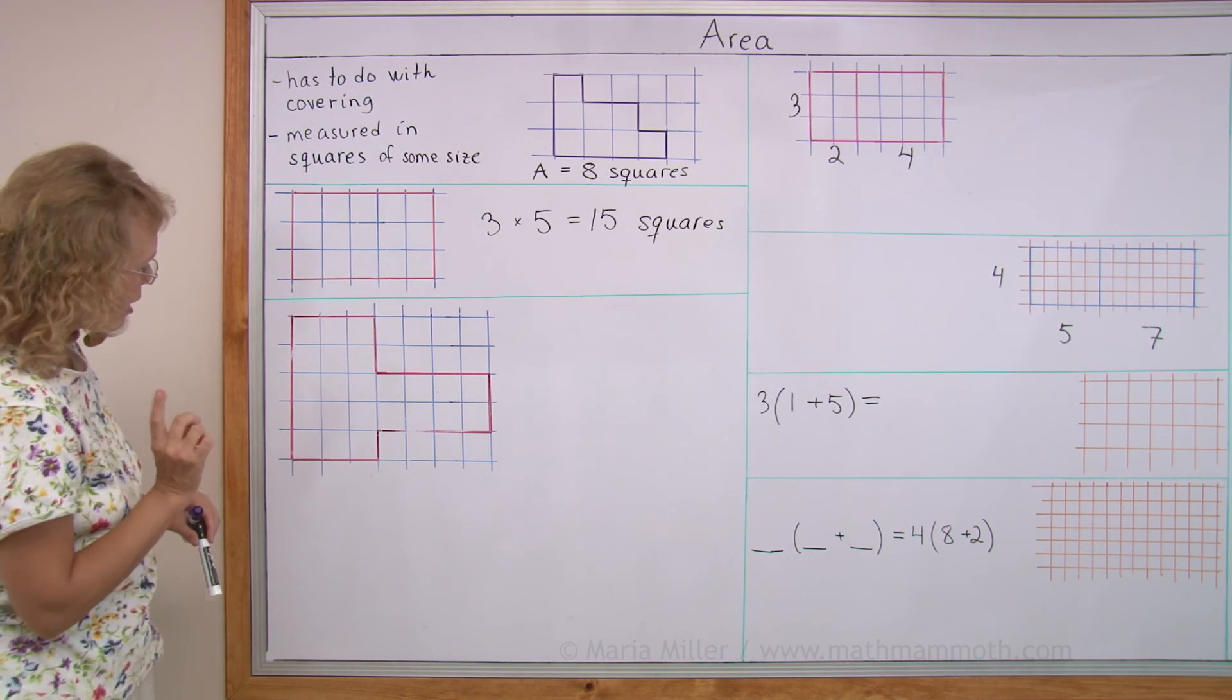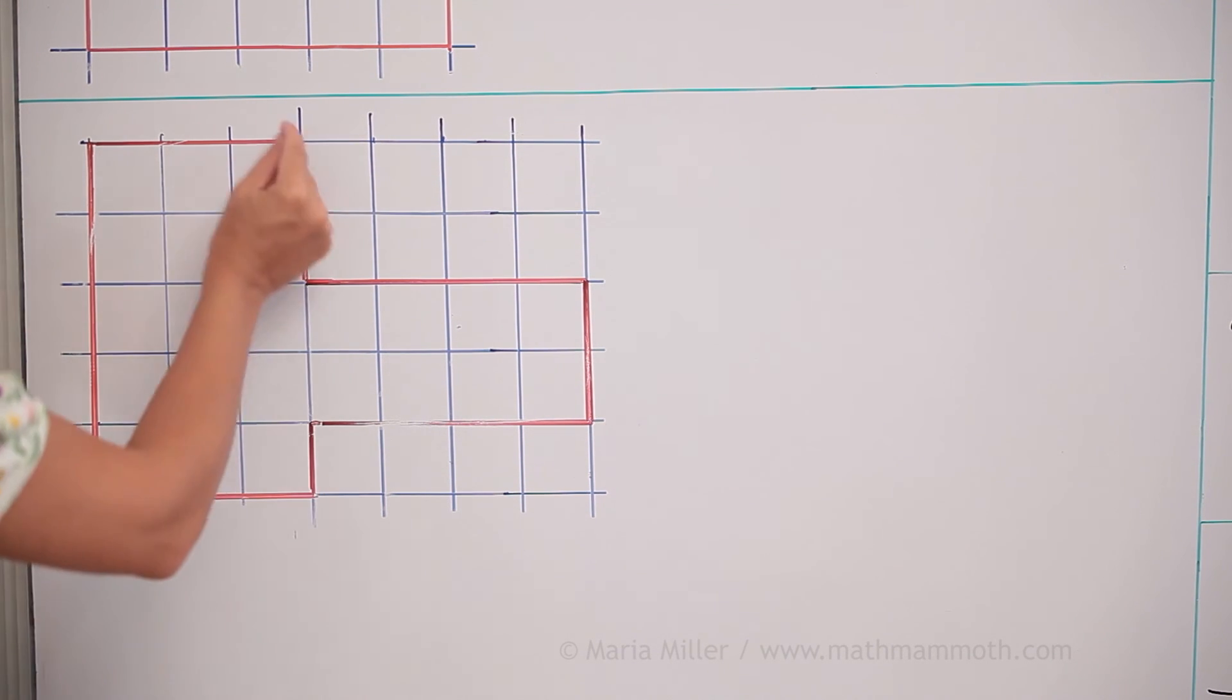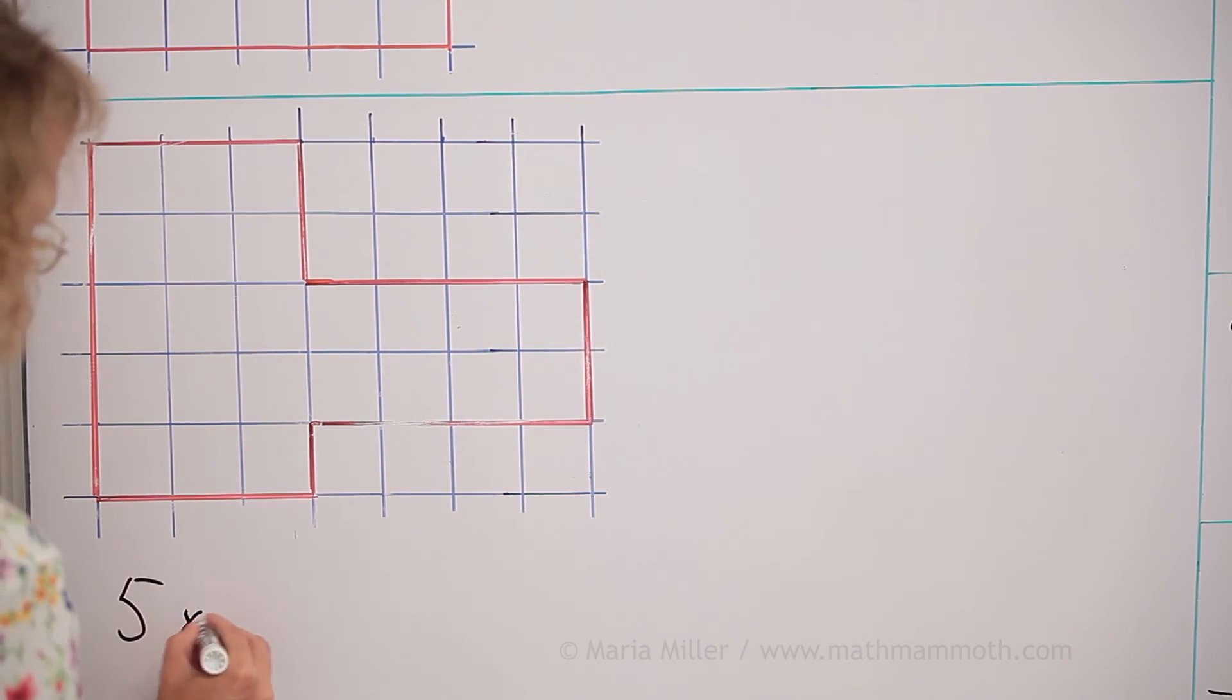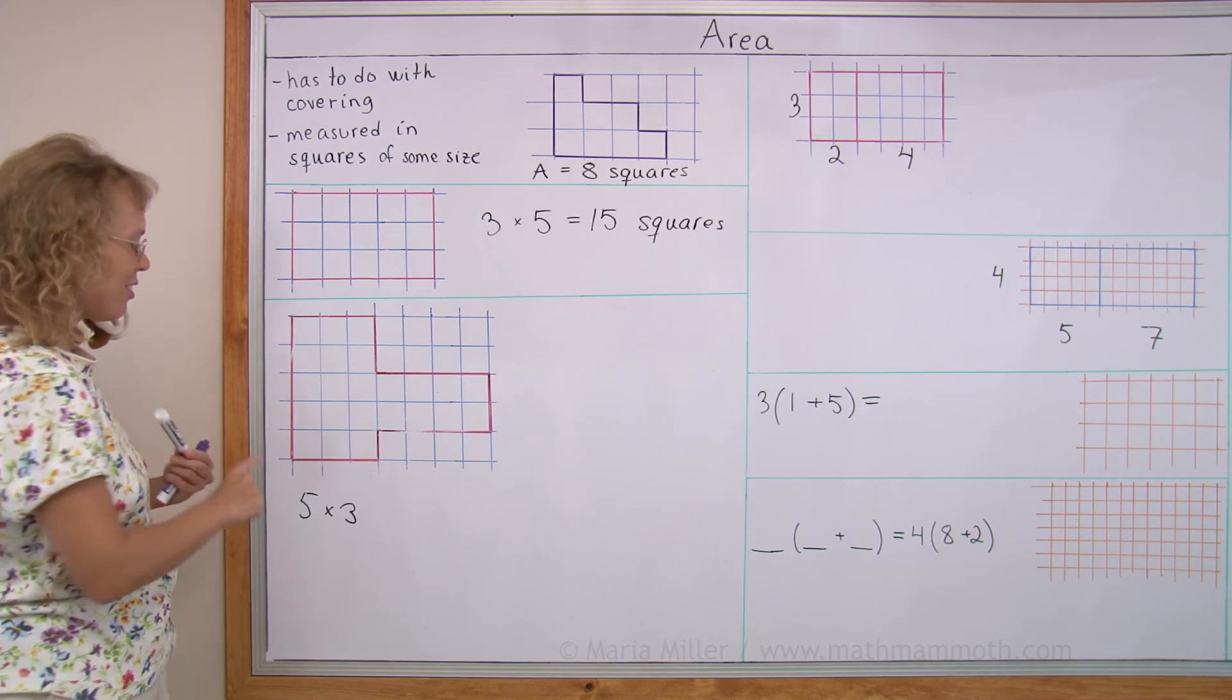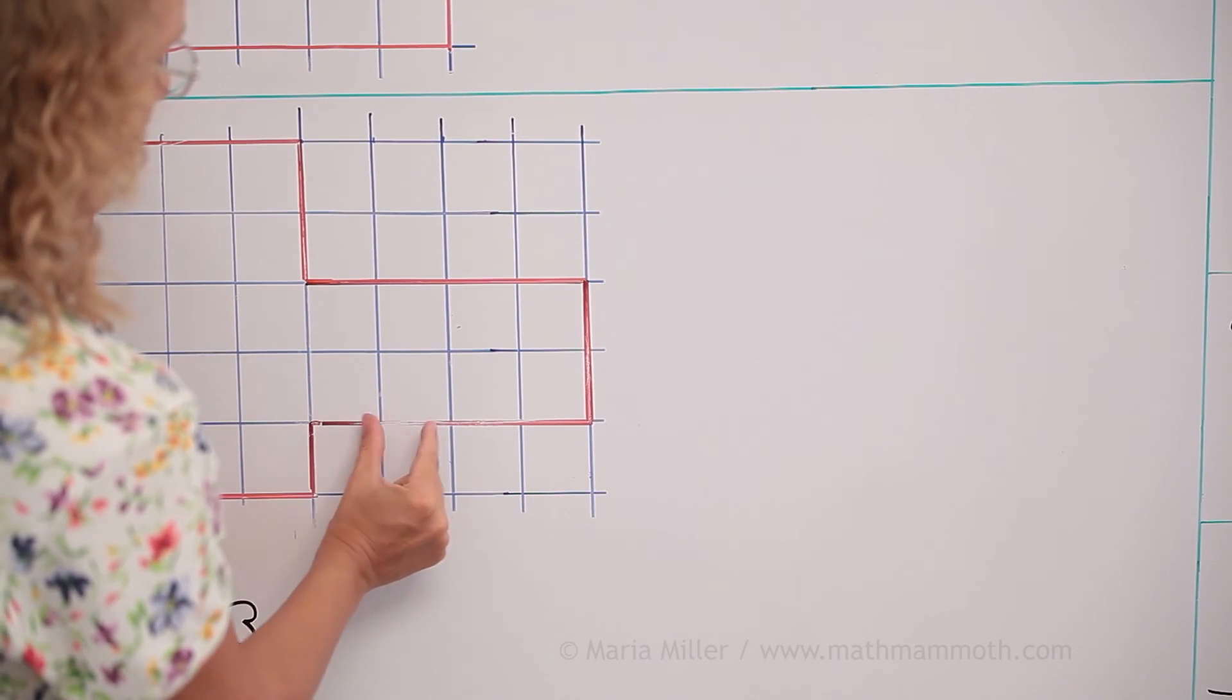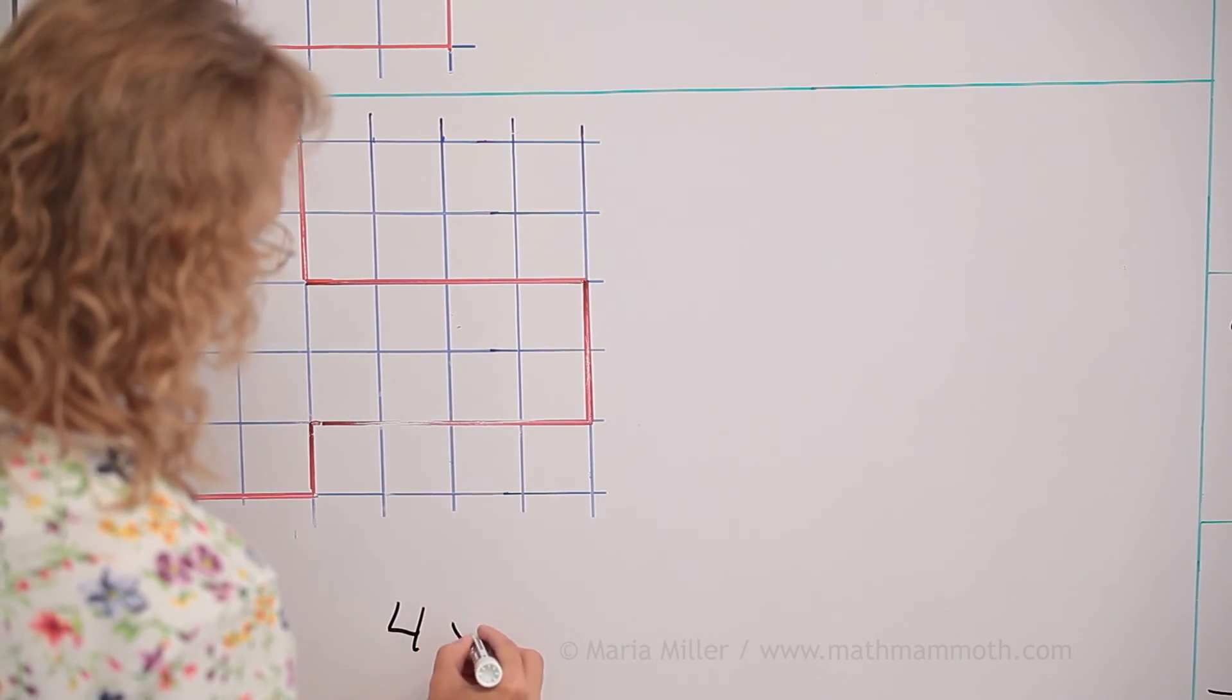But let's practice writing two multiplications for the area of this shape. This rectangle, we write the multiplication. So we count these units here. 1, 2, 3, 4, 5. And this way. 3. So this here is 5 times 3. Or 3 times 5. You could write it 3 times 5 too. And then this here has 1, 2, 3, 4. And 2. Right? 4 times 2.